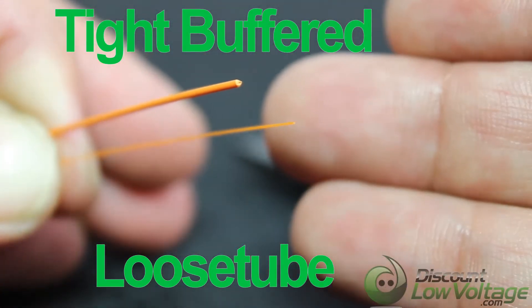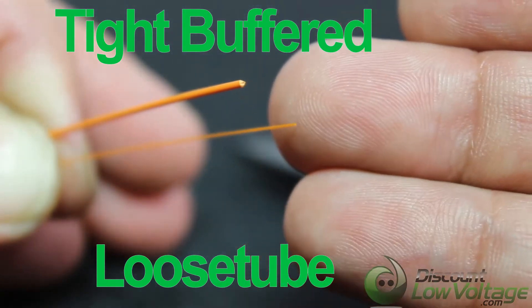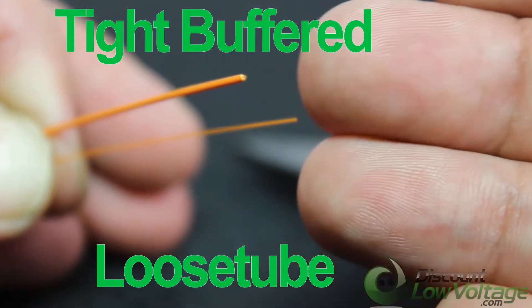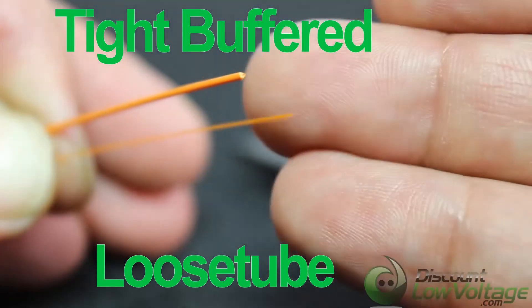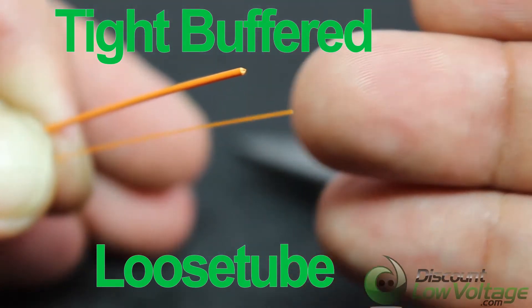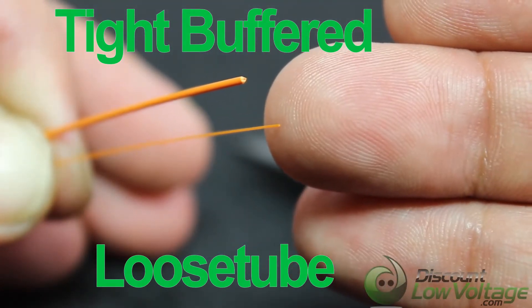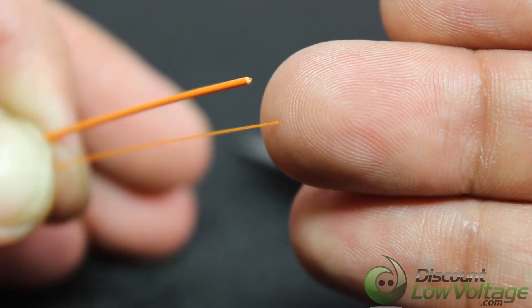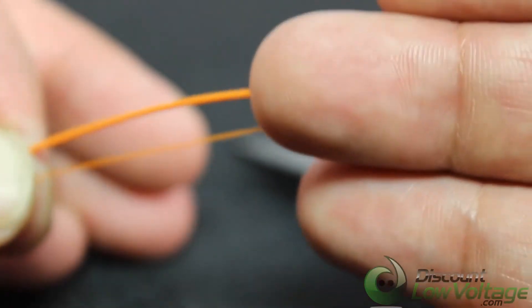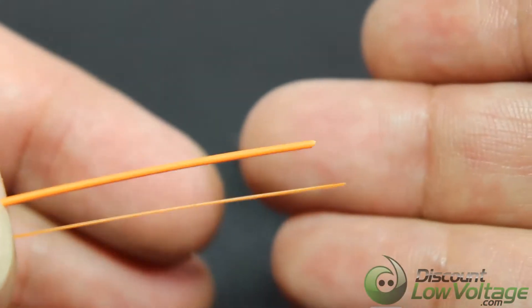Now as you can imagine, if you have loose tube fiber, the cable construction will be smaller if you use obviously the smaller of the two. So you have your buffer. We're gonna strip some off so you can check out the cladding underneath.